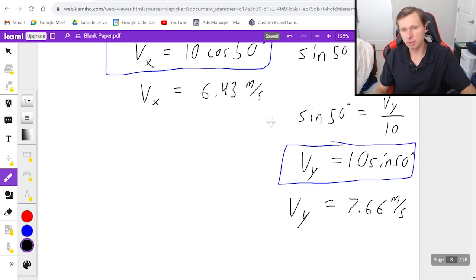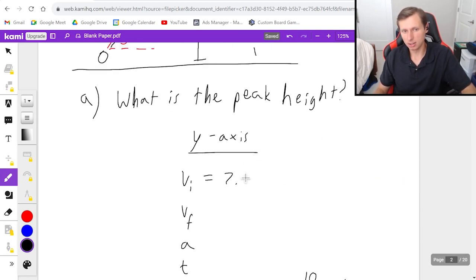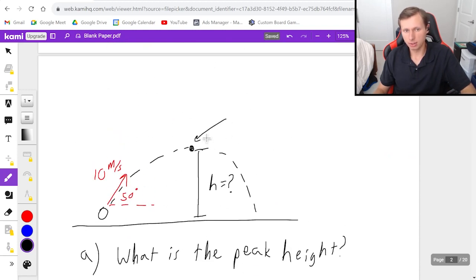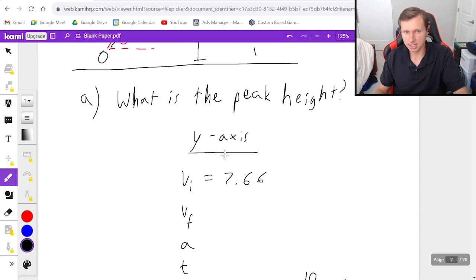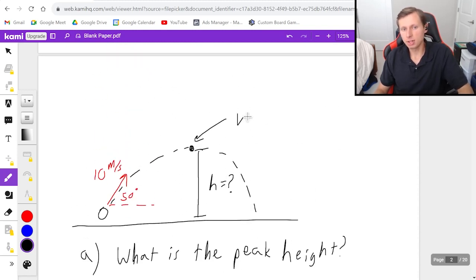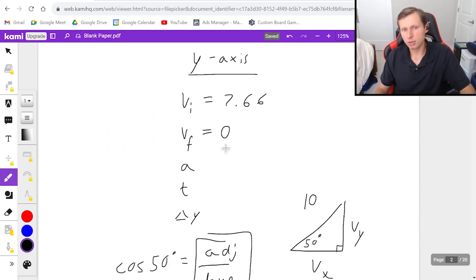So that number is going to be what I plug in for vy right here. 7.66. V final. Do we know v final at that point right there? And the answer is yes for the y-axis. And the reason I'm saying the y-axis is because, again, I'm still talking about the y-axis. And at the peak height, velocity is always zero, or at least the y-axis. X-axis is not zero. We'll talk about that later. But v final will be zero. We know that. Acceleration, we already said it. It's going to be negative 9.8. Time is unknown, and delta y is what I'm solving for because I wanted the peak height and delta y is height.